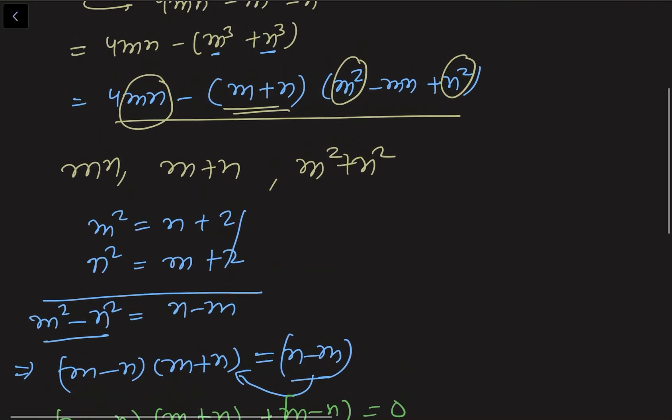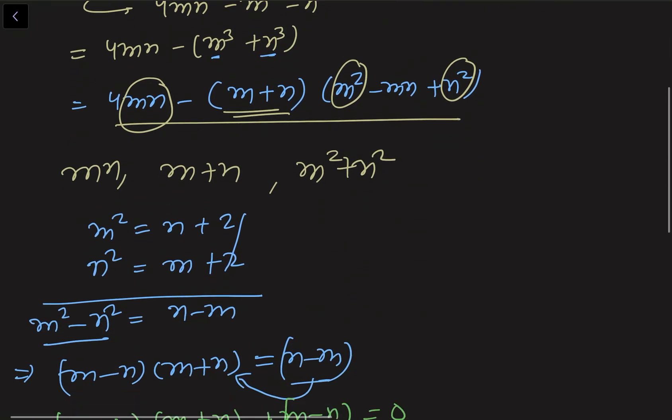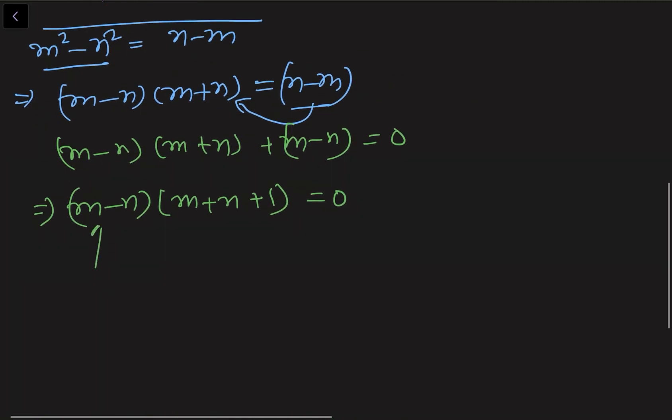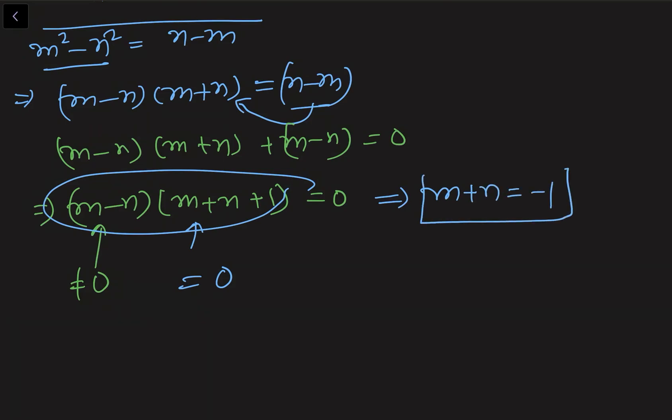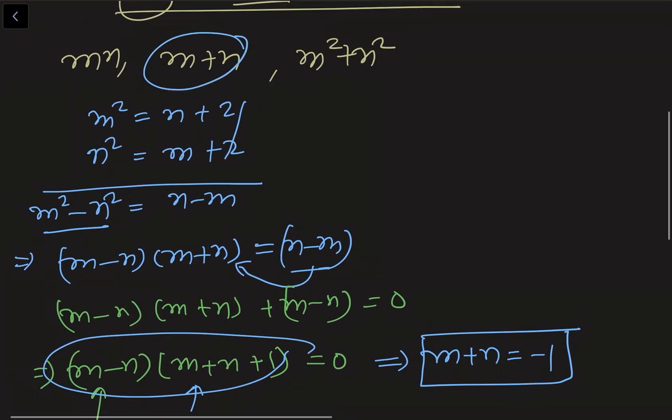But in the question it is given that m is not equal to n. That means this thing cannot be equal to 0. That only means that this thing is equal to 0. Then only this expression becomes 0. So from here I am getting m + n = -1. Well and fine. So out of these three things one thing is sorted out. Now we have to look for these two things.